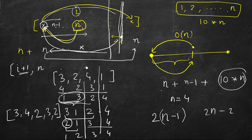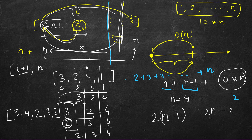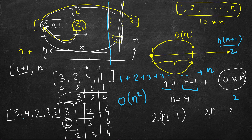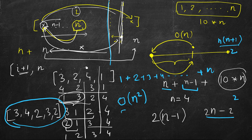For time complexity: searching for the nth element takes n time, then n-1, then n-2, down to 2. Summing 2 + 3 + ... + n, which for simplicity is n(n+1)/2, giving O(n²). For space, we return a result list that can have at most 2n-2 elements, so space is O(n) — and we have to return something of that order anyway.